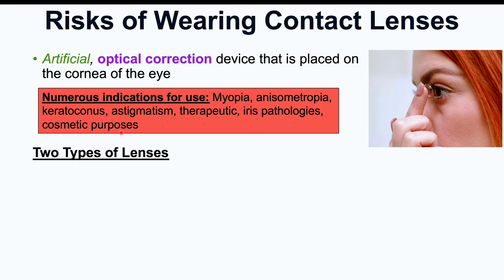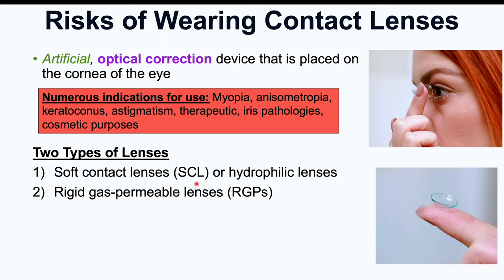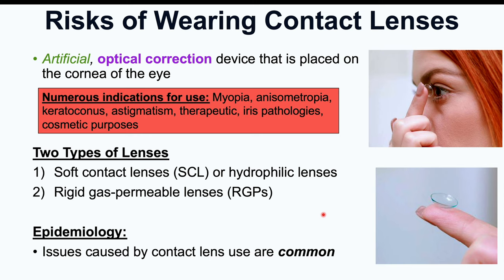In general, there are two types of contact lenses. One is known as soft contact lenses or hydrophilic lenses. The second is known as rigid gas permeable lenses, or RGPs. These are going to be important when we talk about some of the risk factors for certain eye conditions related to contact lens use. Contact lens use has become more prevalent in recent decades, and the issues caused by contact lenses are quite common.